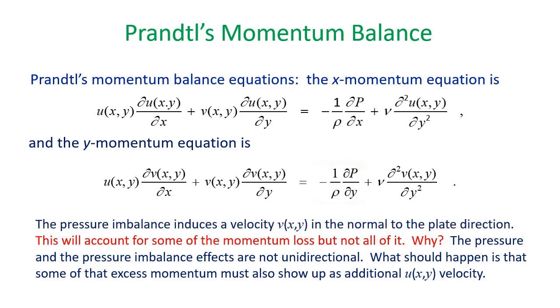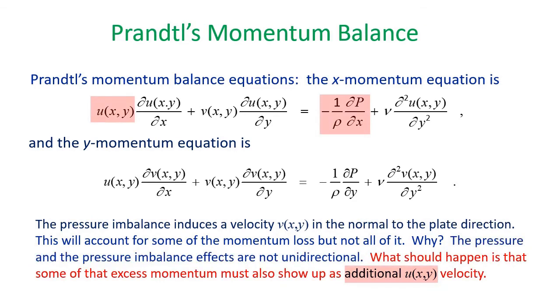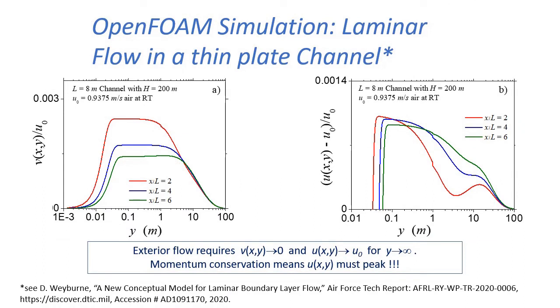The normal velocity momentum will account for some of the momentum loss, but not all of it. Why do I say this? Because the pressure effects are not unidirectional. This means that the pressure imbalance generating the normal velocity should also generate an excess velocity in the x direction. This excess velocity will be noticeable just above the slow moving fluid, which in this case is just above the viscous part of the boundary layer. It is a little hard to visualize exactly how this would play out in a boundary layer. Perhaps the best way to see what is going on is from actual experimental measurements. And the best way to do that is to do some computer simulations.